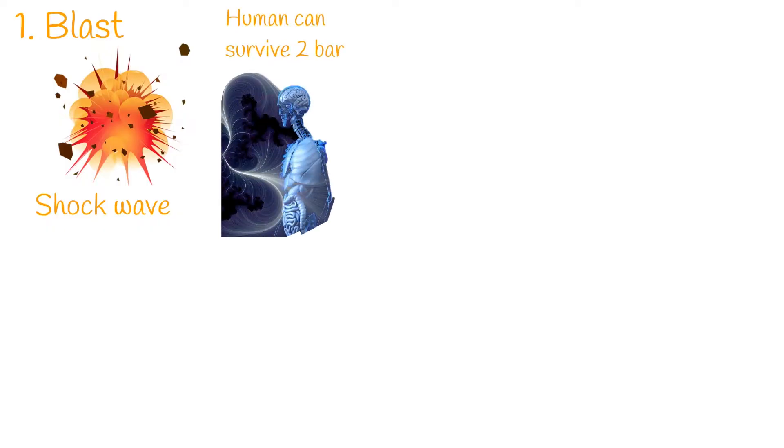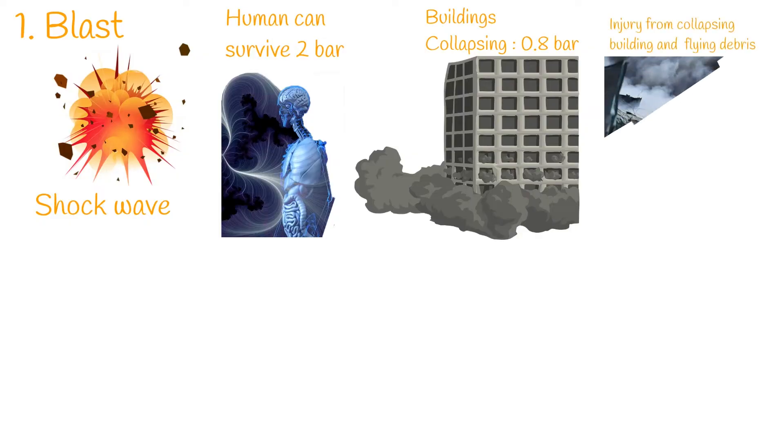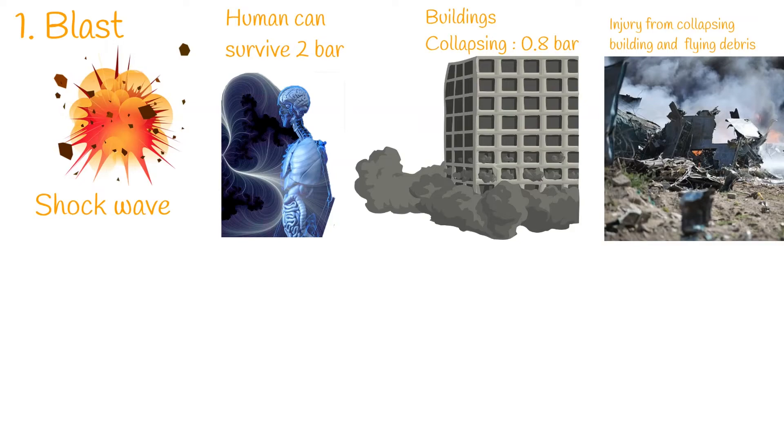Blast effects are similar to conventional explosives. The shockwave can directly injure humans by rupturing eardrums or lungs, or by hurling people at high speed. However, direct injury from the pressure wave is minimal because the human body can survive up to 2 bar, while most buildings can withstand only 0.8 bar. Therefore, the highest risk during blasts is injury from collapsing buildings and flying debris.